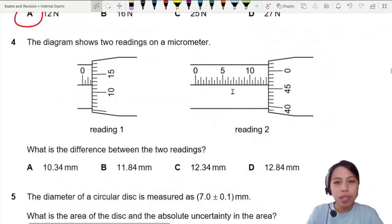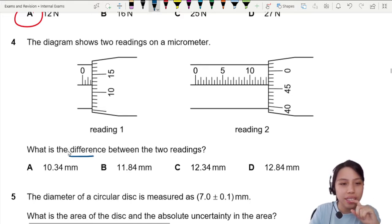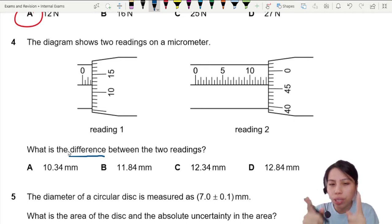This diagram shows two readings on a micrometer - reading one and reading two. What is the difference between the two readings? This is sneaky. Difference between the two readings.